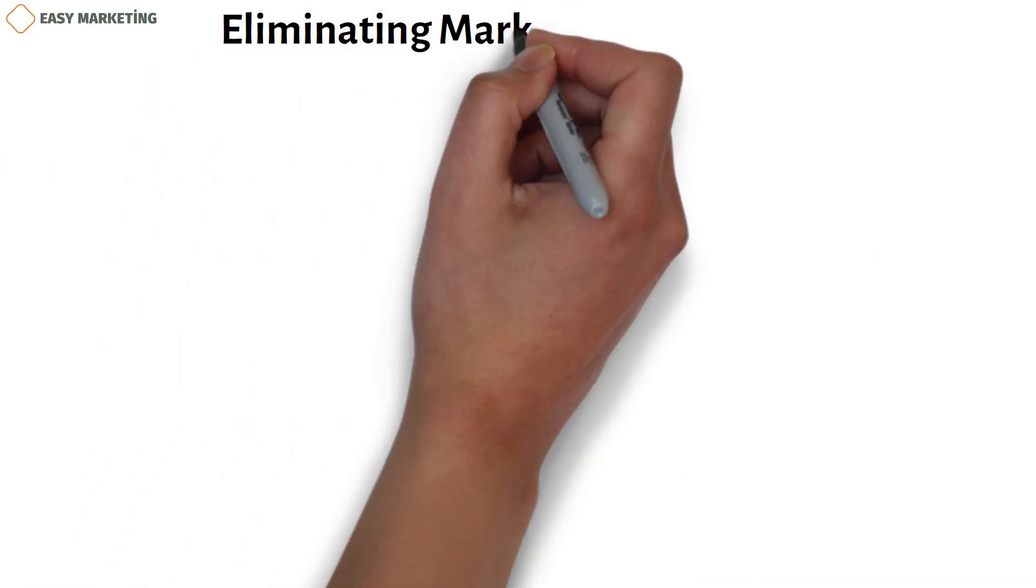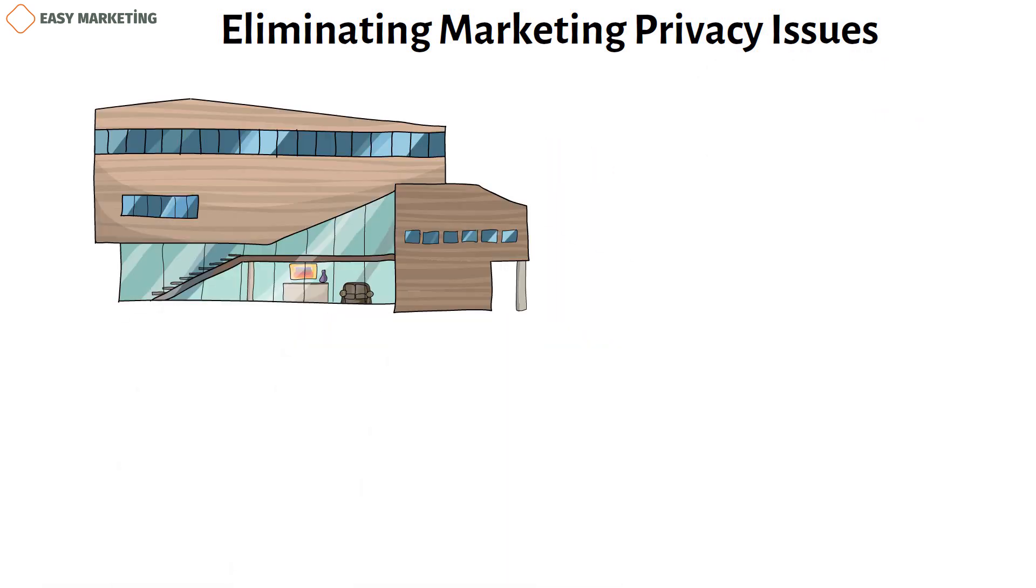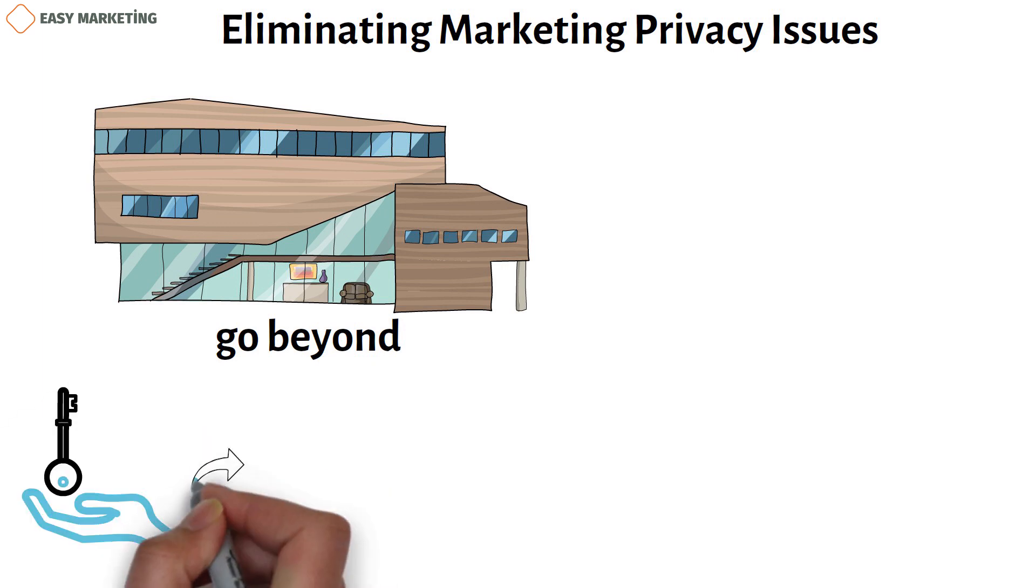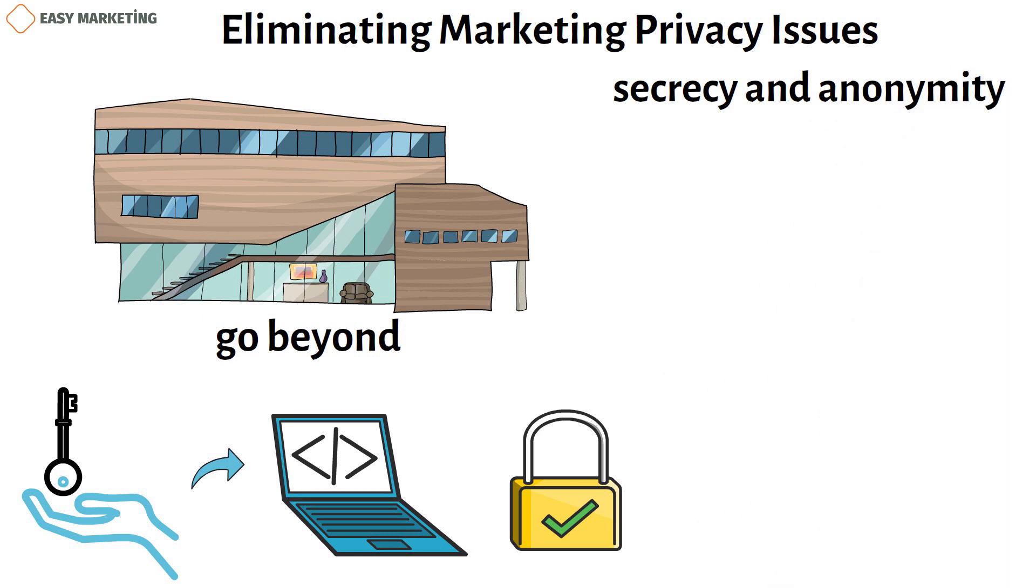Eliminating marketing privacy issues. A blockchain marketing agency's duties go beyond only ensuring the process of marketing is secure, trustworthy, and transparent. One of the key factors influencing a person's decision to use a certain online technology service is privacy. Customers are concerned about the secrecy and anonymity of their online purchases.